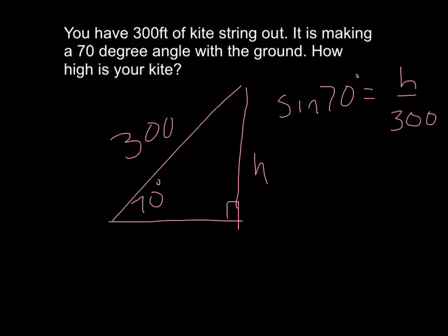So there's your formula, sine 70 equals h over 300. That's opposite over hypotenuse. Cross multiply, put it in your calculator, come up with an h. Do all that, you find that the height of your kite is 281.9 feet up. Pretty high.